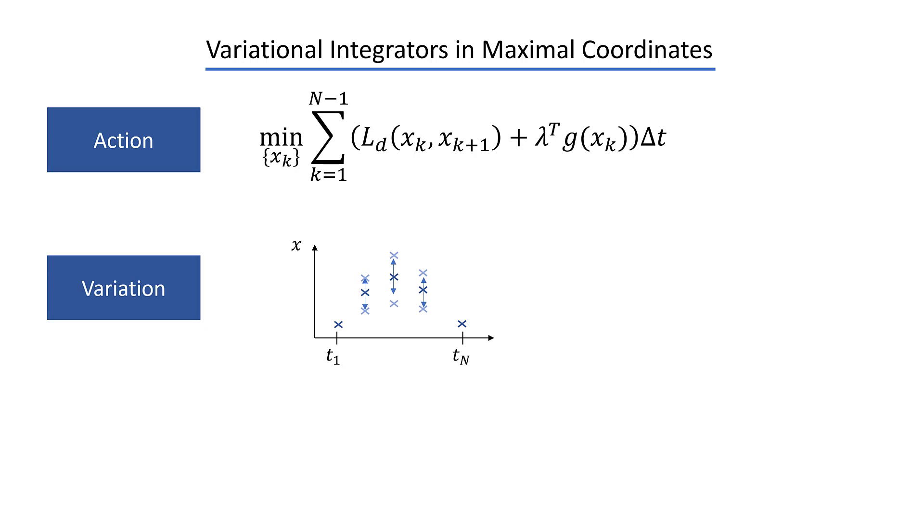To derive a simple first-order integrator, we only look at a very short trajectory consisting of three naught points, and since the boundary points have to be fixed, we can only vary the point in the middle. And now we find the optimal value simply by taking the gradient of the action sum with respect to this naught point and setting it to zero as for a regular optimization problem. And this gives you your equations of motion.